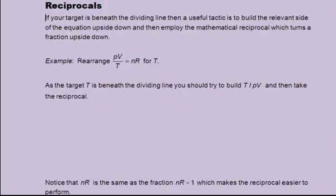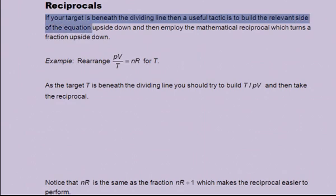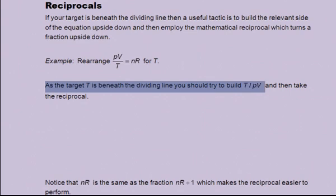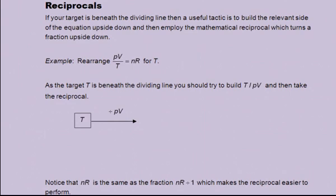Reciprocals. If your target is beneath the dividing line, then a useful tactic is to build the relevant side of the equation upside down, and then employ the mathematical reciprocal which turns the fraction upside down. Let's look at an example. Rearrange pv/t = nr for t. As the target t is beneath the dividing line, you should try to build t/pv and then take the reciprocal. Start with your target t in a box. Then divide by pv, to give t/pv. Now take the reciprocal, to give the required expression of pv/t.